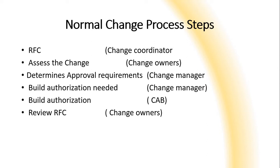If build authorization is not needed, the change manager determines whether the change should be approved or rejected. If it does not require the CAB, the change manager can decide to reject or approve the change. If build authorization is needed, CAB members are identified and the CAB is called for further evaluation. The 'build authorization' stage is performed by the CAB and change managers working together to approve or reject the change.